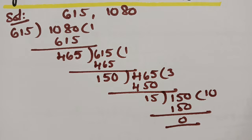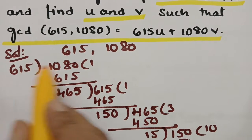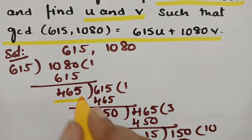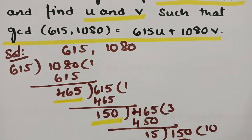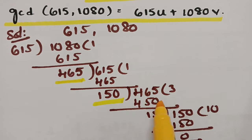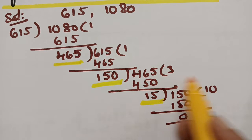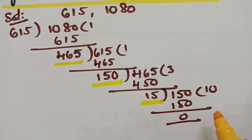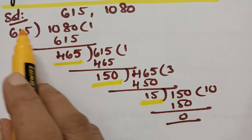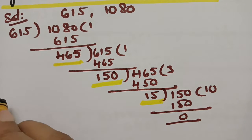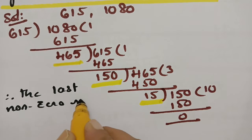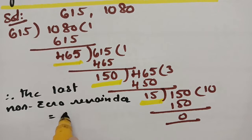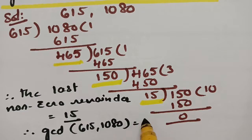When we get 0 as the final remainder, we stop. The remainders observed were: first 465, then 150, then 15, then 0. So the last non-zero remainder is 15. Therefore, the GCD of 615 and 1080 is equal to 15.